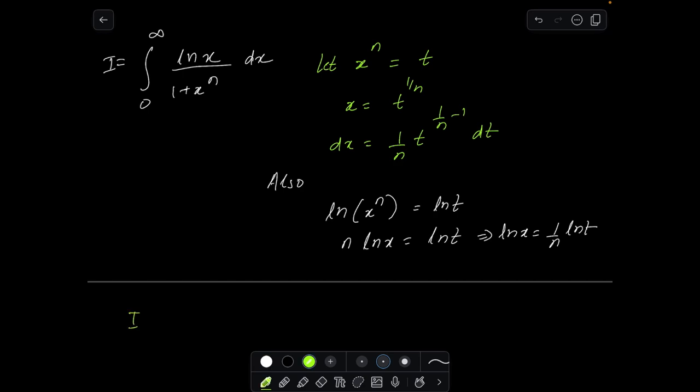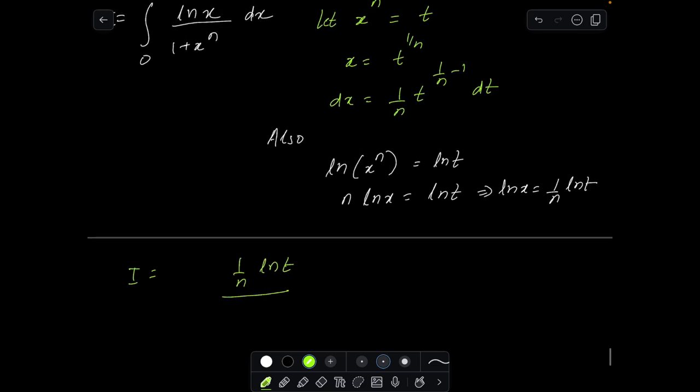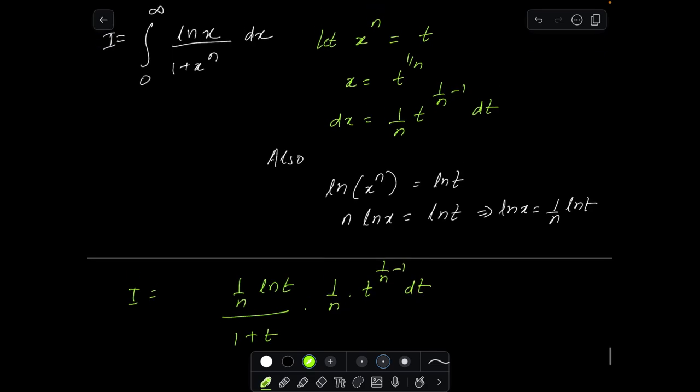Using this in our integral, let's call it by the name of I. So I will now become ln x as 1 by n ln t divided by 1 plus x to the power n which is t, and dx will be 1 by n t to the power 1 by n minus 1 dt.